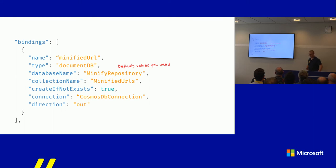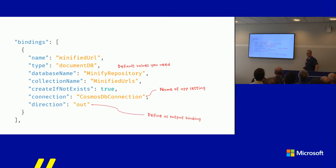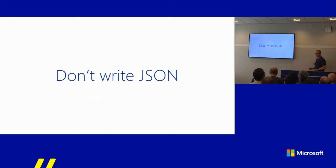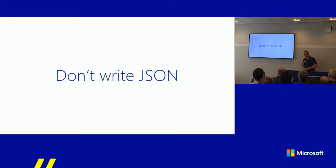For an output binding to Cosmos DB, you define the name, the type, default values, the database name, the collection name, and the app setting that holds the actual connection string. One important thing to remember: always define the direction as 'out'. If you don't, Azure Functions may treat it as an input binding and things may break. This is a lot of JSON, and I utterly hate JSON, so I recommend using Visual Studio to generate all of this automatically.